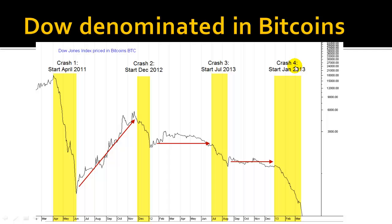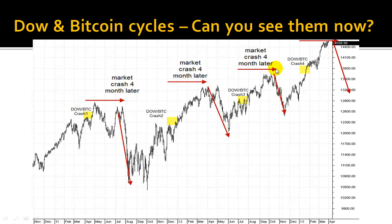The fourth crash in the Dow charted in Bitcoins started in January 2013, as can be seen here. Now, mapping this to the current situation — January 2013 is marked with a quarter on the chart. This was the fourth crash we have seen in the Dow/Bitcoin chart. Now let's move four months into the future — one, two, three, four — which brings us to April 2013. This is the current day. If we project this cycle forward, we would expect the same thing to happen in April 2013. Can you see the cycle now?